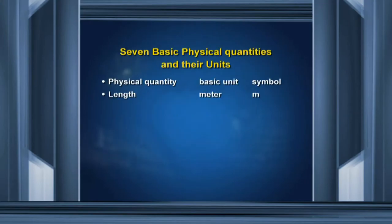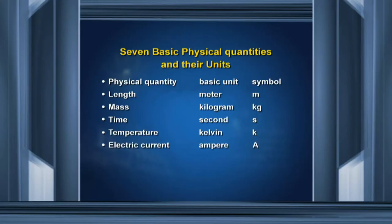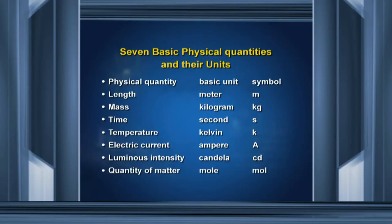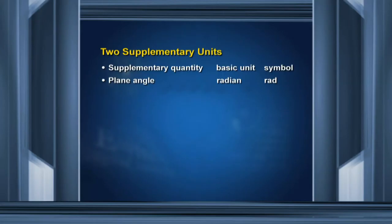The seven basic physical quantities and their units are: length — meter, symbol small m; mass — kilogram, symbol kg, where k is not capital; time — second, symbol s; temperature — Kelvin, symbol capital K; electric current — ampere, symbol capital A; luminous intensity — candela, symbol cd; quantity of matter — mole, symbol mol. The two supplementary units are: plane angle, measured in radian, symbol rad — degrees need to be converted into radians for scientific notation. The second supplementary unit is solid angle, called steradian, symbol sr.